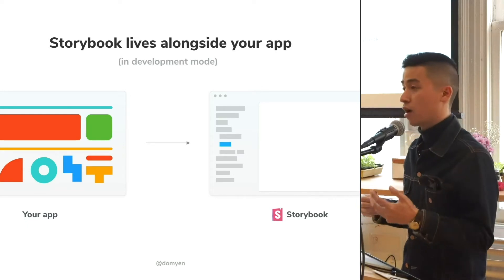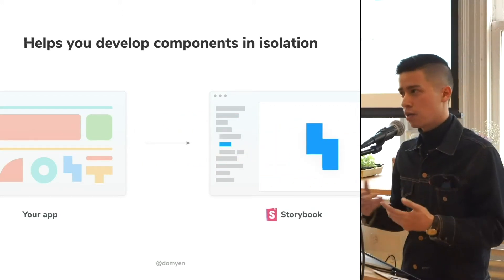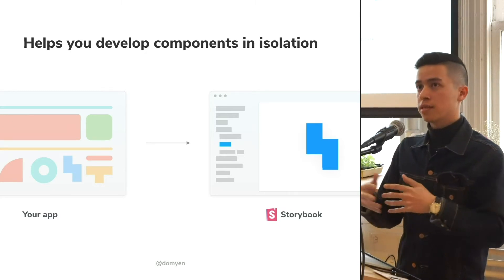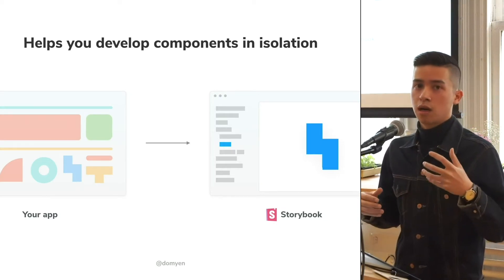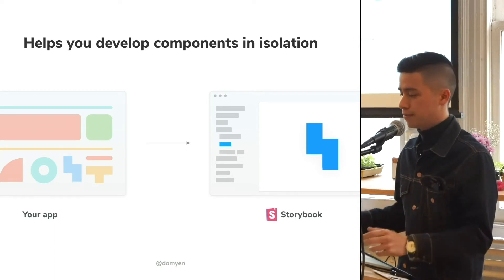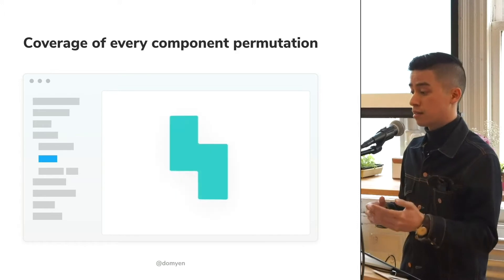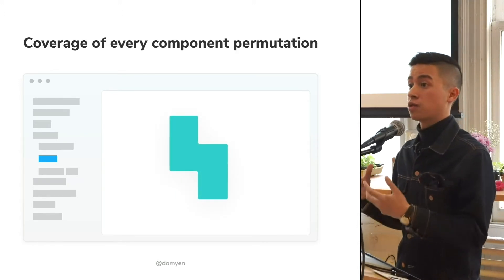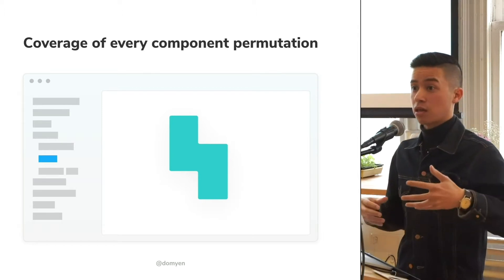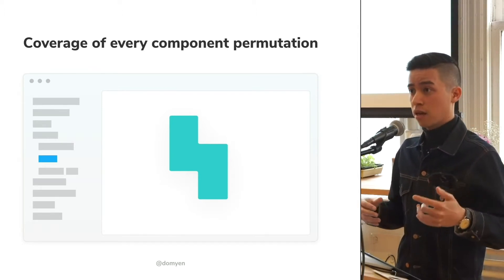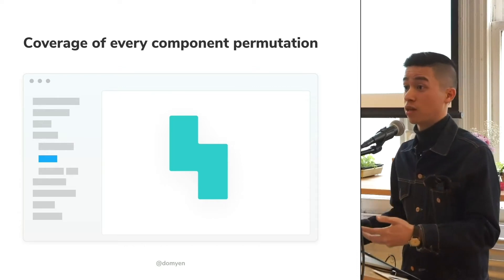Storybook lives alongside your app in development mode, and what it does is help you develop components in isolation. The reason you want to develop components in isolation is because you disentangle your business logic from your stateless functional components — and in doing that, it helps you reason about them in much more intuitive ways. The idea is that you pass your props, context, and state to your component, and Storybook is responsible for rendering your component using all those variations and data, thus allowing you to keep track of all the permutations that your component is supposed to support.